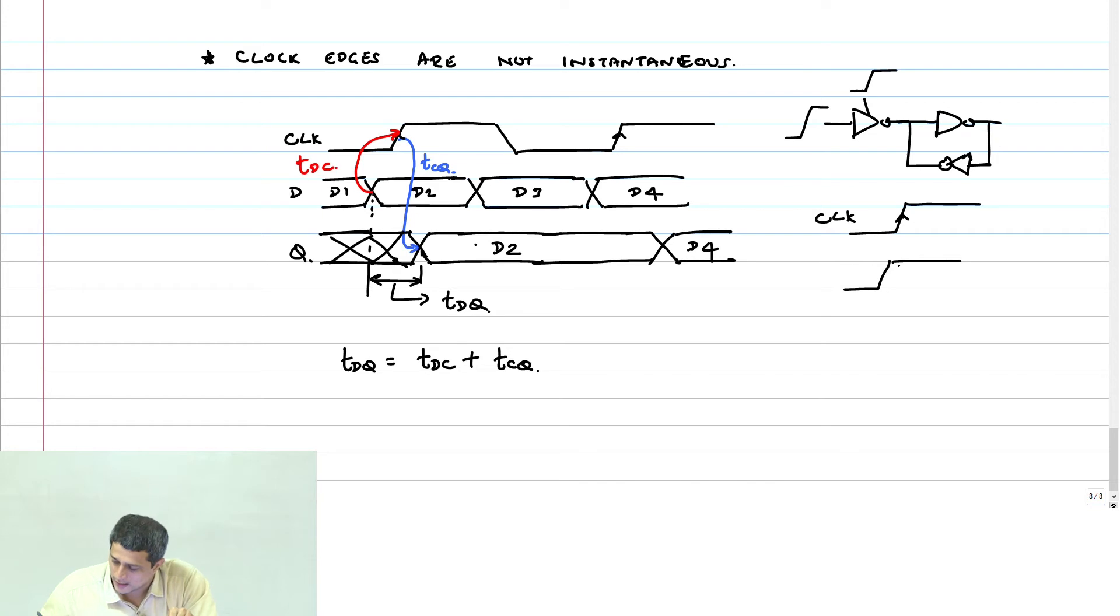Let us assume that D changed almost in sync with the clock. At somewhere here, the clock will cut off this tri-state inverter path.